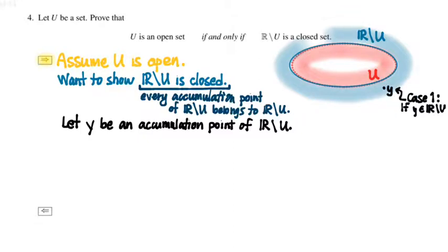But in that case, there's nothing for us to prove, right? Because then Y already belongs to R minus U. So the interesting case is the case where we pick Y such that it's not in R minus U.